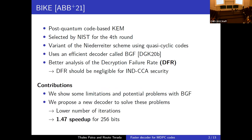The main motivation is BIKE, a post-quantum code-based scheme recently selected by NIST for the fourth round, consisting of a variant of the Niederreiter scheme using quasi-cyclic moderate-density parity-check codes. The decoder used by BIKE is called BGF, a very efficient decoder designed specifically for BIKE, which also comes with a better analysis of the decryption failure rate (DFR). The DFR must be negligible in order to apply CCA conversions to BIKE and for it to be secure.